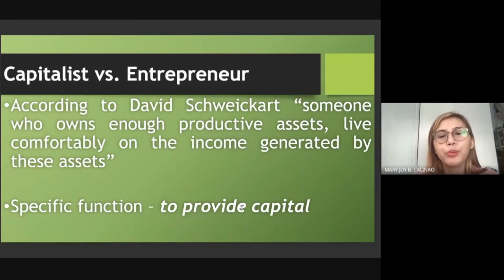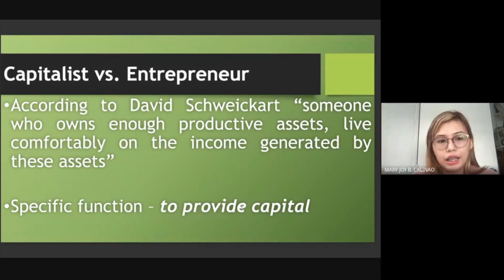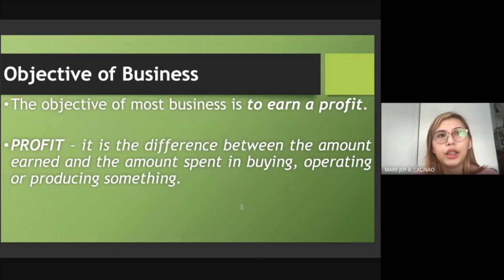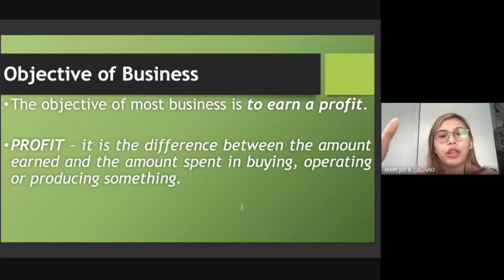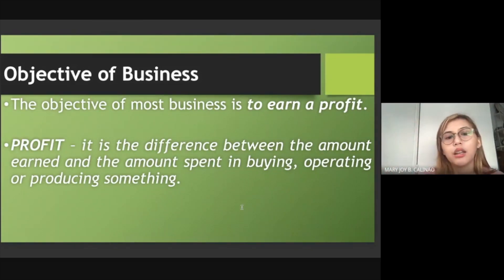According to David Ricardo, a capitalist is someone who owns enough productive assets to live comfortably on the income generated by those assets. Their specific function is to provide capital — resources and assets. The main objective of most businesses is to earn a profit. Profit is the difference between the amount earned and the amount spent in buying, operating, or producing something. In accounting, it is the difference between income and expenses.